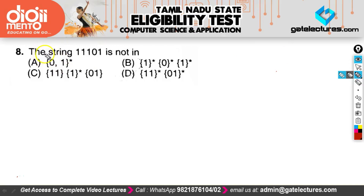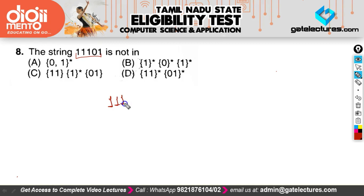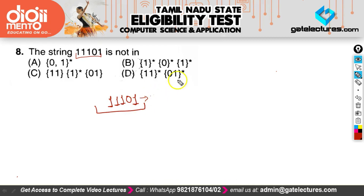The question asks which regular expression cannot derive the string 1 1 1 0 1. Looking at the string carefully, we can see there are 4 ones — that is an even number of 1s. These kinds of questions are actually very easy to solve if you know the trick.